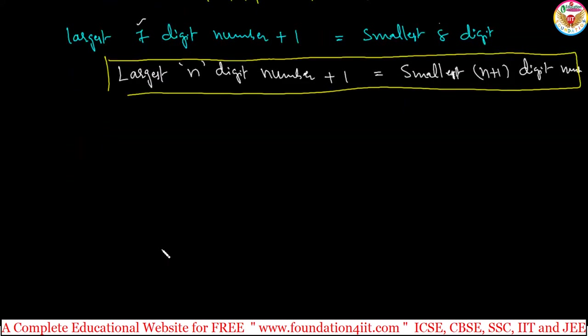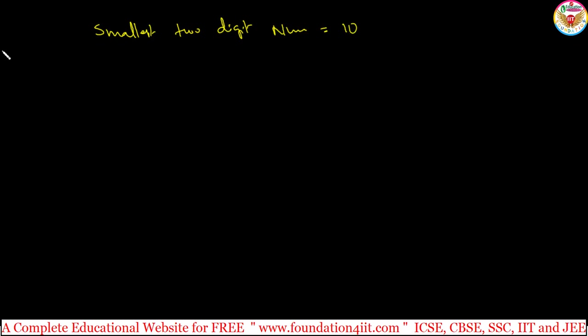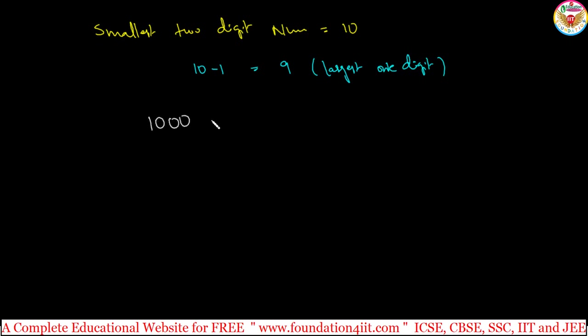Same way, when reducing numbers: the smallest two-digit number is 10. From 10, subtract 1 — that becomes 9. So 9 is the largest one-digit number. Same pattern, just reversed. Even the smallest 4-digit number — 1000 — minus 1 becomes 999, the largest 3-digit number. So by subtracting 1, a number with fewer digits is obtained.